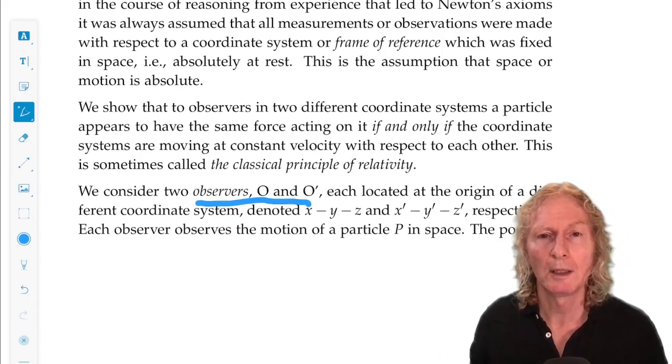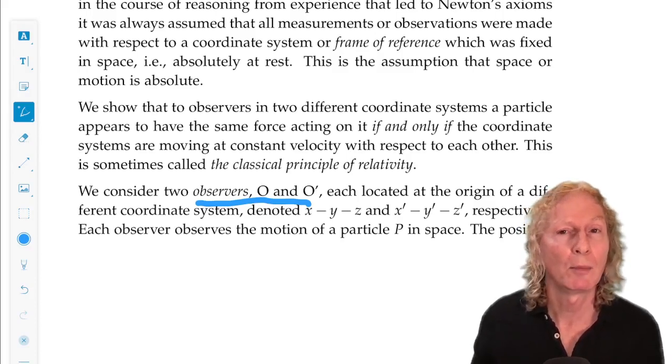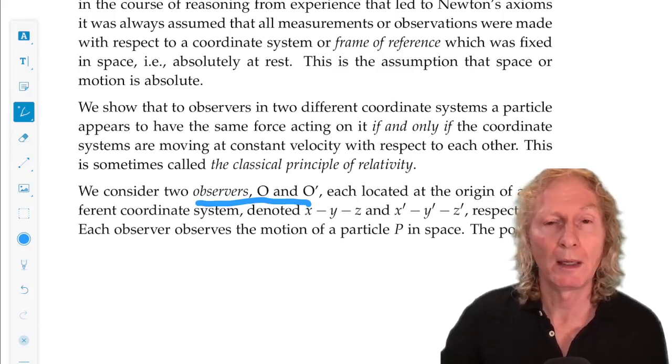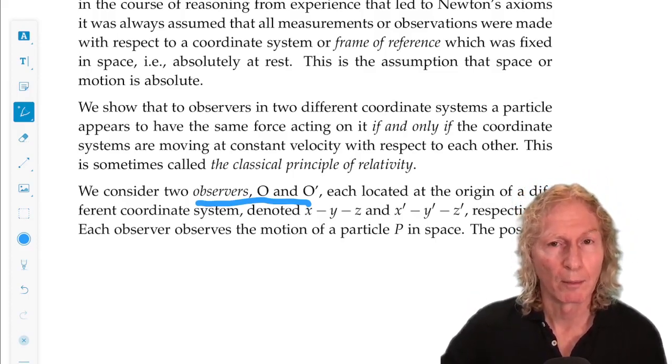Now, in each coordinate system, each observer views a particle, the same particle moving around in space. They just have their own coordinate system for describing the motion of that particle.